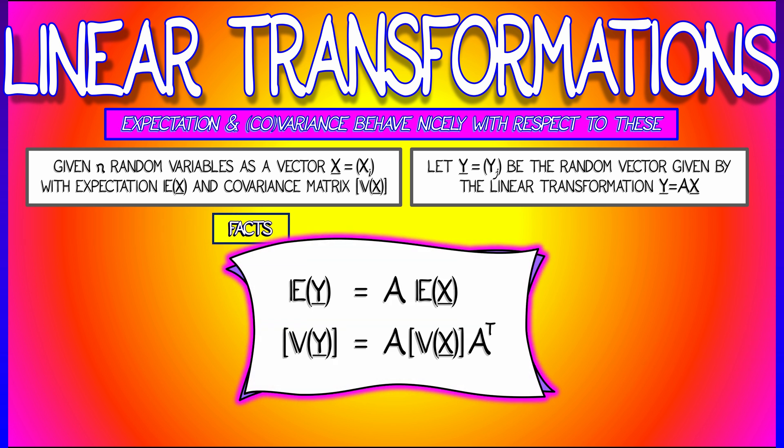That is, the expectation of y is A times the expectation of x. And the covariance matrix of y is what you get from the covariance matrix of x by multiplying on the left by A and on the right by A transpose.